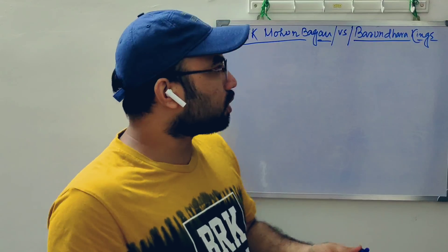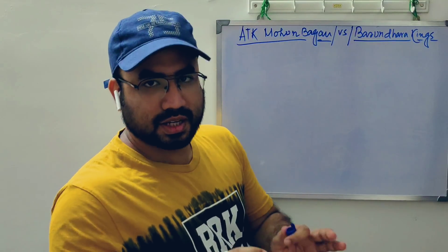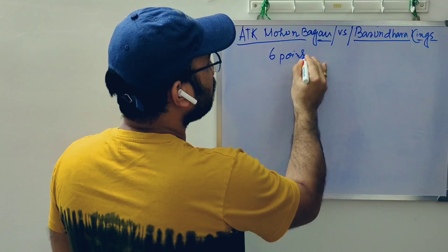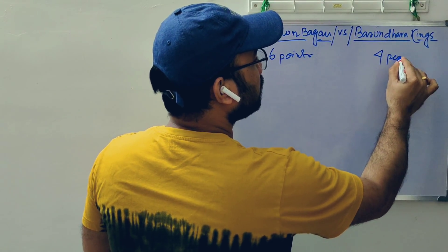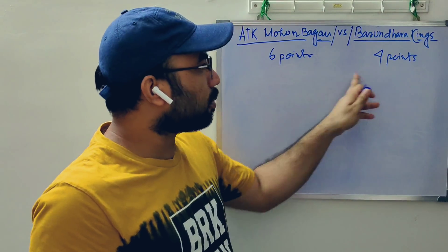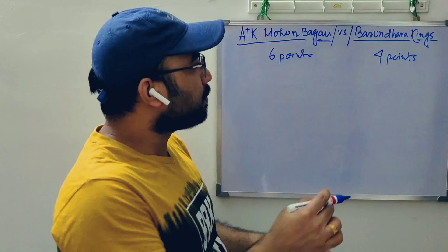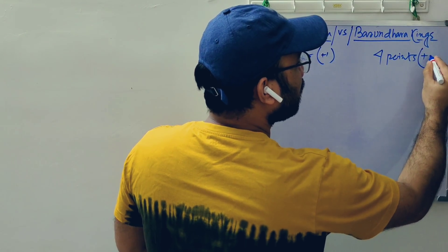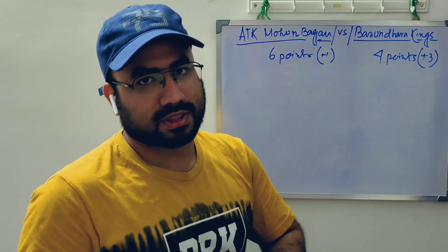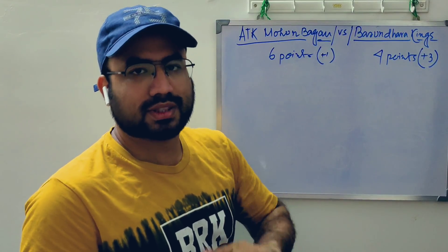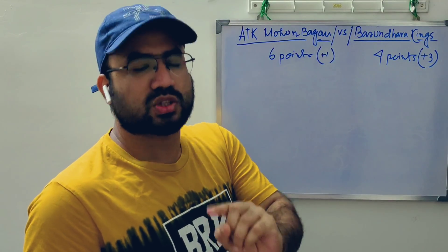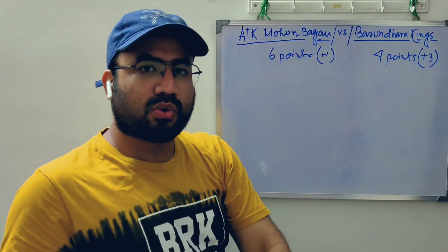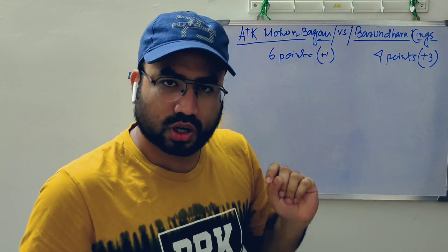The first advantage is ATK has 6 points and Basundhara has 4 points. ATK has plus 1 goal difference but Basundhara has the best match record. Basundhara has 3 points from their last match while ATK won their match. The semi-final playoff depends on these matches and the third team is out, so this match is crucial.